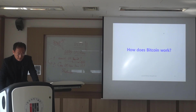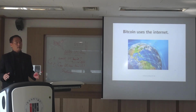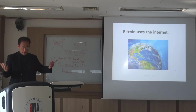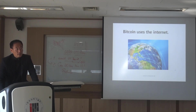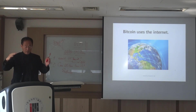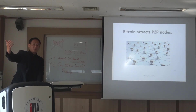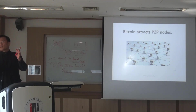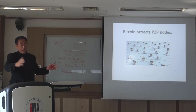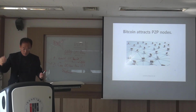How does Bitcoin work? Bitcoin uses the internet — there is internet everywhere, you have cell phones connected to the internet, then you can use Bitcoin. Bitcoin is an overlay layer on top of a TCP/IP layer. Bitcoin attracts P2P nodes like computers — anyone with a computer can join, you just need to download the Bitcoin software. You need some type of memory because Bitcoin has been around more than 10 years and the amount of ledger blocks is large.